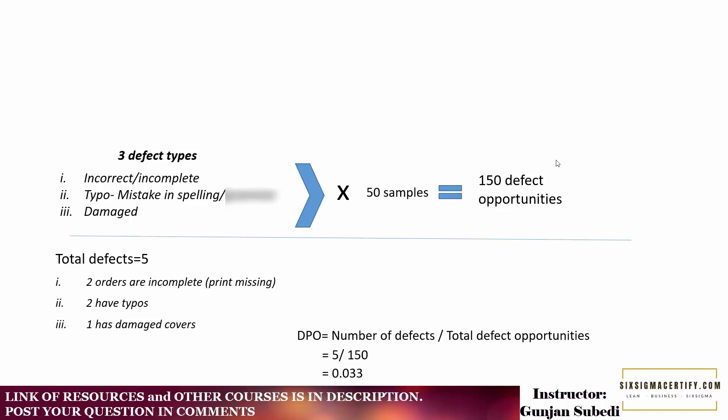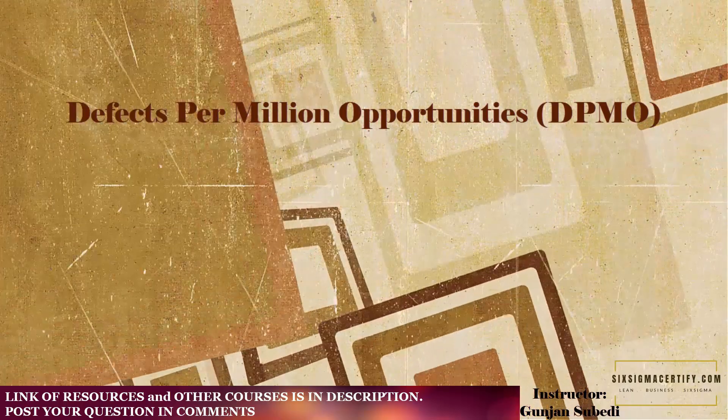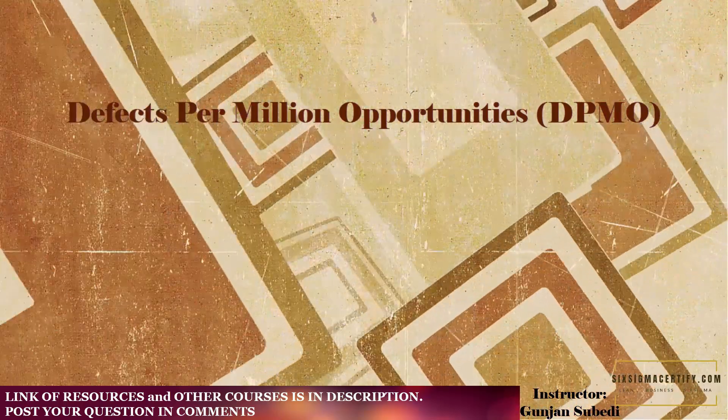So this is our defects per opportunities. The defects per opportunities is more relevant and used frequently because it is used to find out the defects per million opportunities, which is more realistic in terms of comparing with the sigma value. We will learn that in the next lecture.